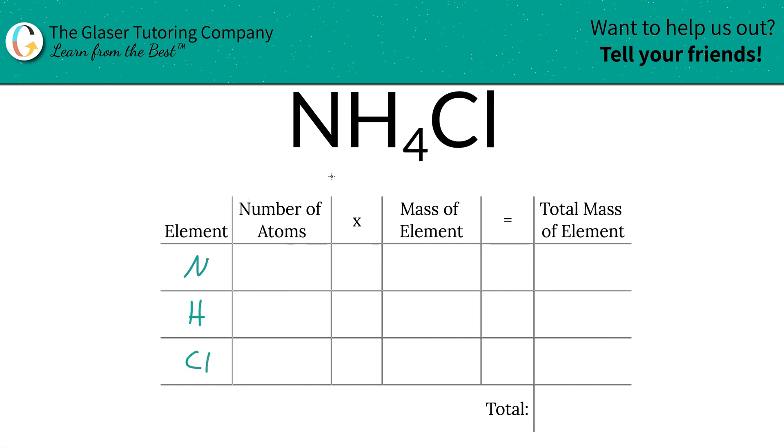Then we're going to write down the number of atoms of each, and that's where the subscripts come into play. So if you don't see a subscript at the bottom of the element, just simply write in a one. So we've got one nitrogen, we've got four hydrogens, and we've got one chlorine.